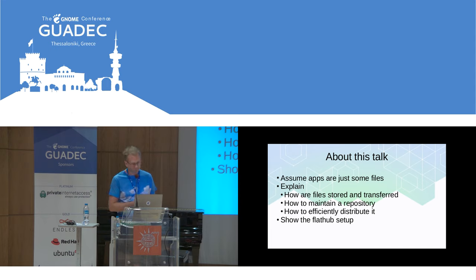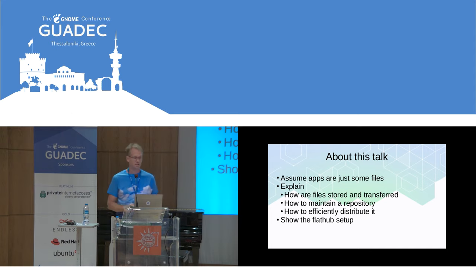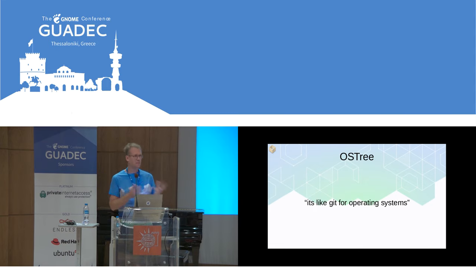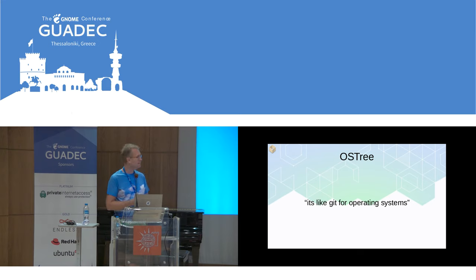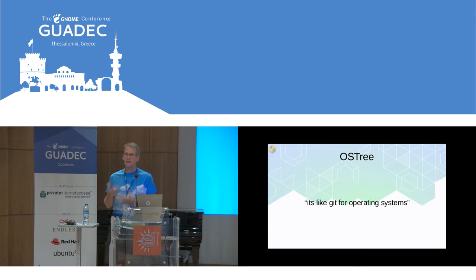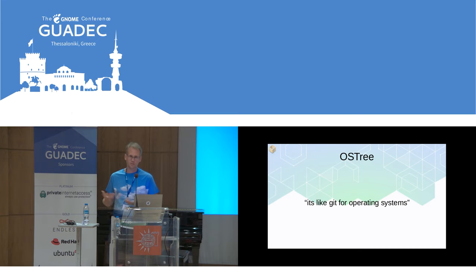I'll also talk about how to set up a network architecture that efficiently lets you download these things, and I will talk some about Flathub and the specific way we set that up. But the first half is going to be somewhat theoretical and not so much about Flatpak as about OSTree, because OSTree is the basis for all that is Flatpak — in particular the network side of it. The short thing to say about OSTree is that it's like Git for operating systems.